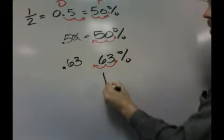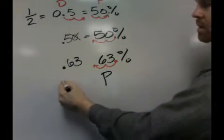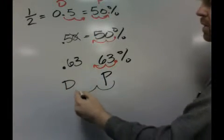So, the big trick for turning a percent into a decimal is you move it over two places.